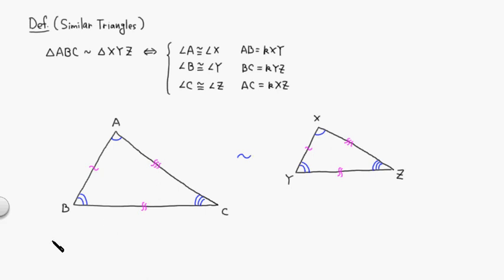Note that if K equals 1, then similarity becomes actually congruence. Triangle ABC is congruent to triangle XYZ. So that's the definition of similar triangles.